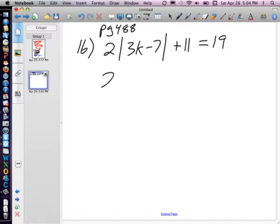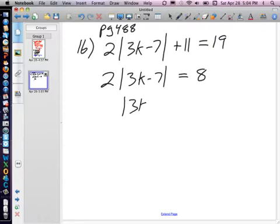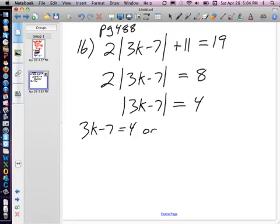Before you set up your 19, negative 19 boundaries, you need to get the absolute value symbol by itself. First we're going to subtract 11 from both sides, we get 8 on the right. Now divide both sides by 2, still not touching this absolute value area. Now that we're back to this absolute value equaling 4, now we can set up our boundaries.